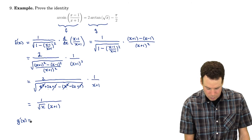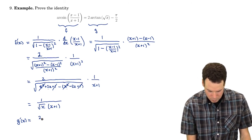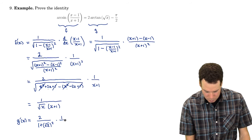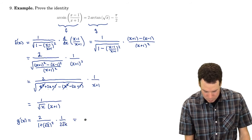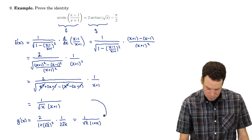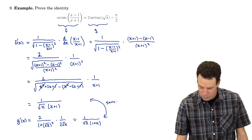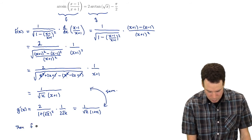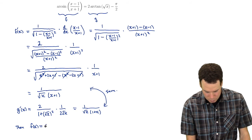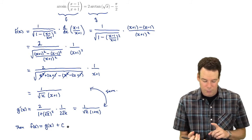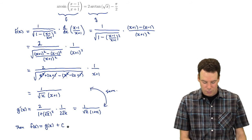Now for the derivative of the other piece, g(x) = 2·arctan(√x). The derivative of arctan is 1/(1 + inside²), times the derivative of the inside. The 2s cancel off, and we get 1/(√x) times 1/(1+x) on the bottom, giving 1/(√x·(x+1)). We notice that f'(x) and g'(x) are the same, so f and g have equal derivatives on the interval.